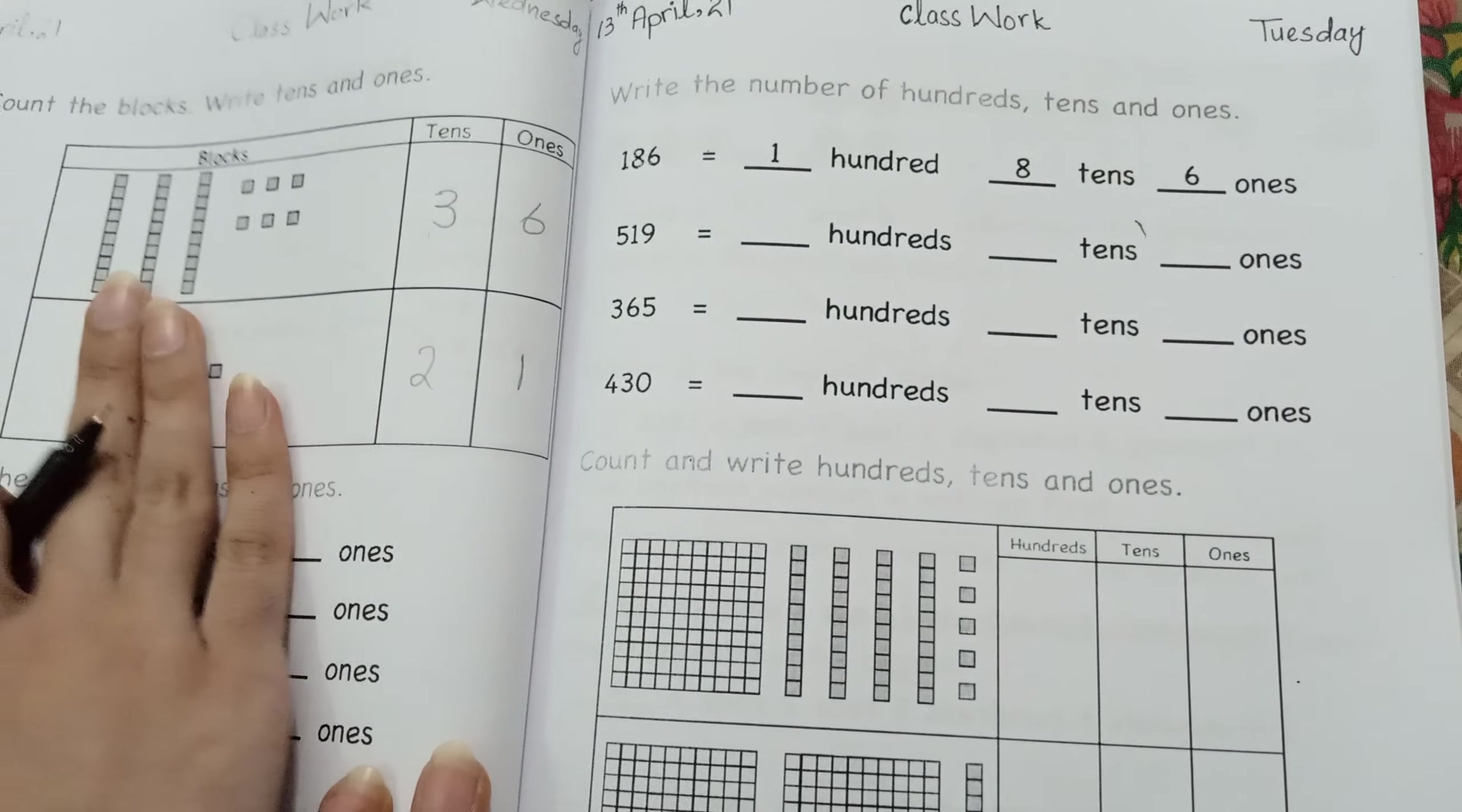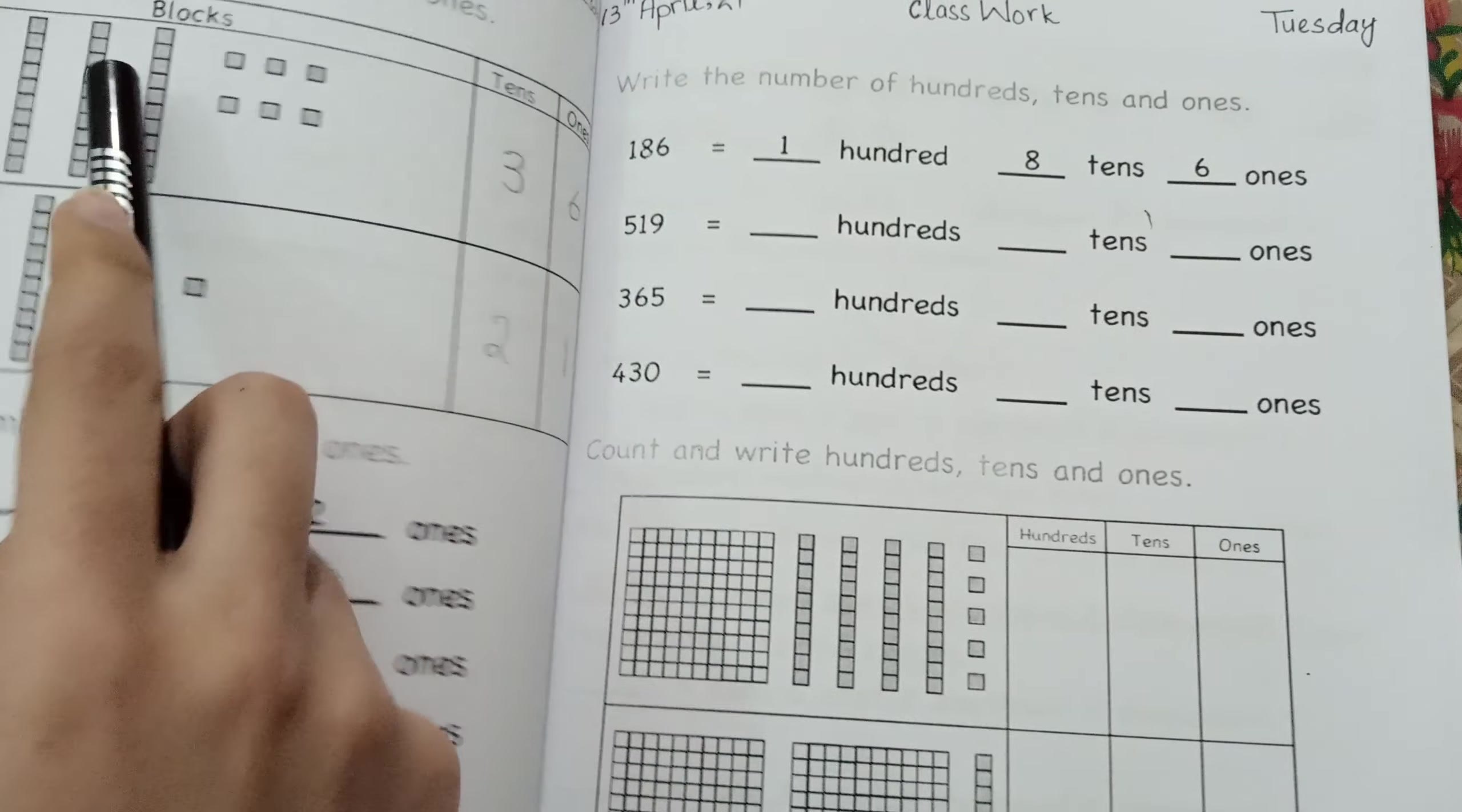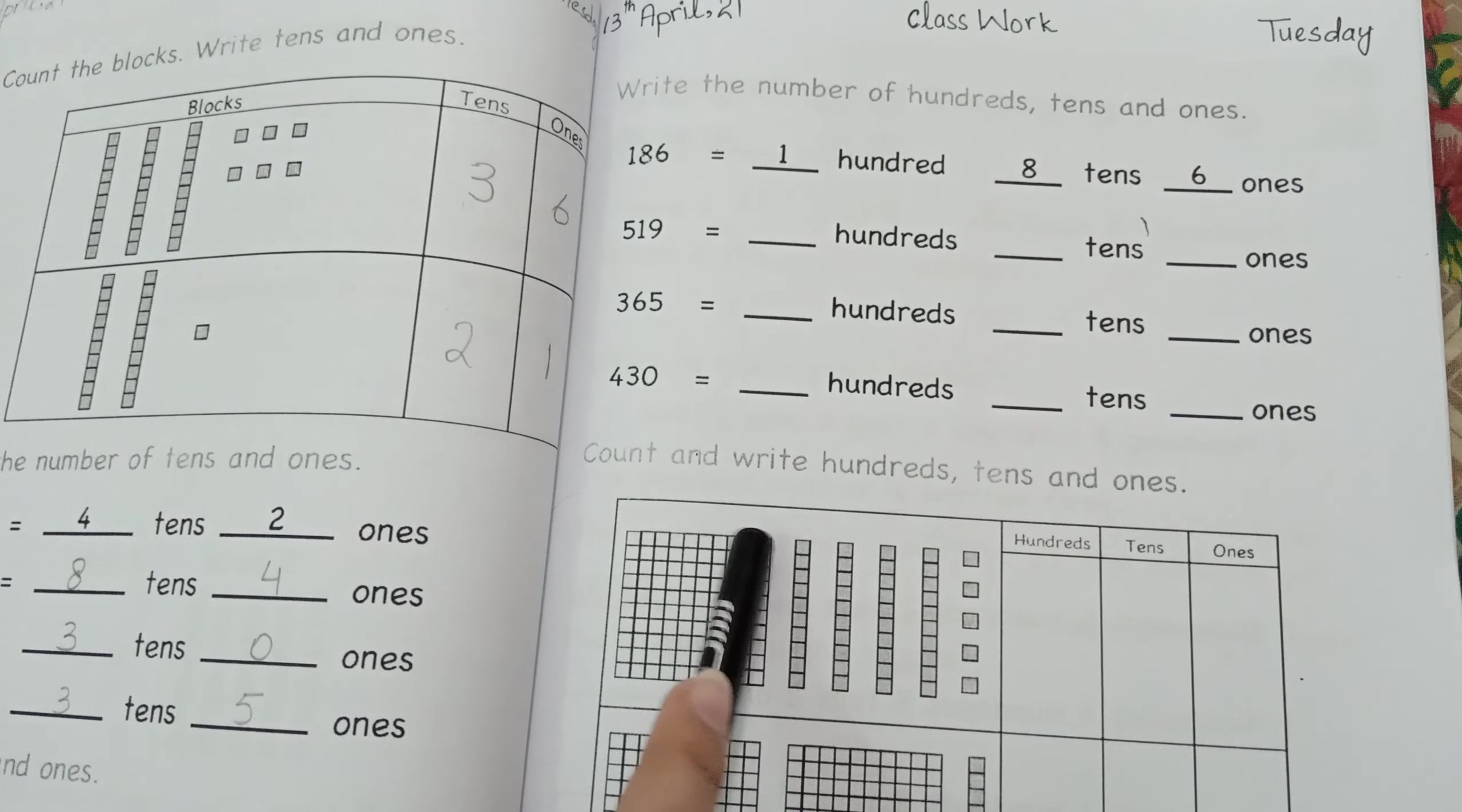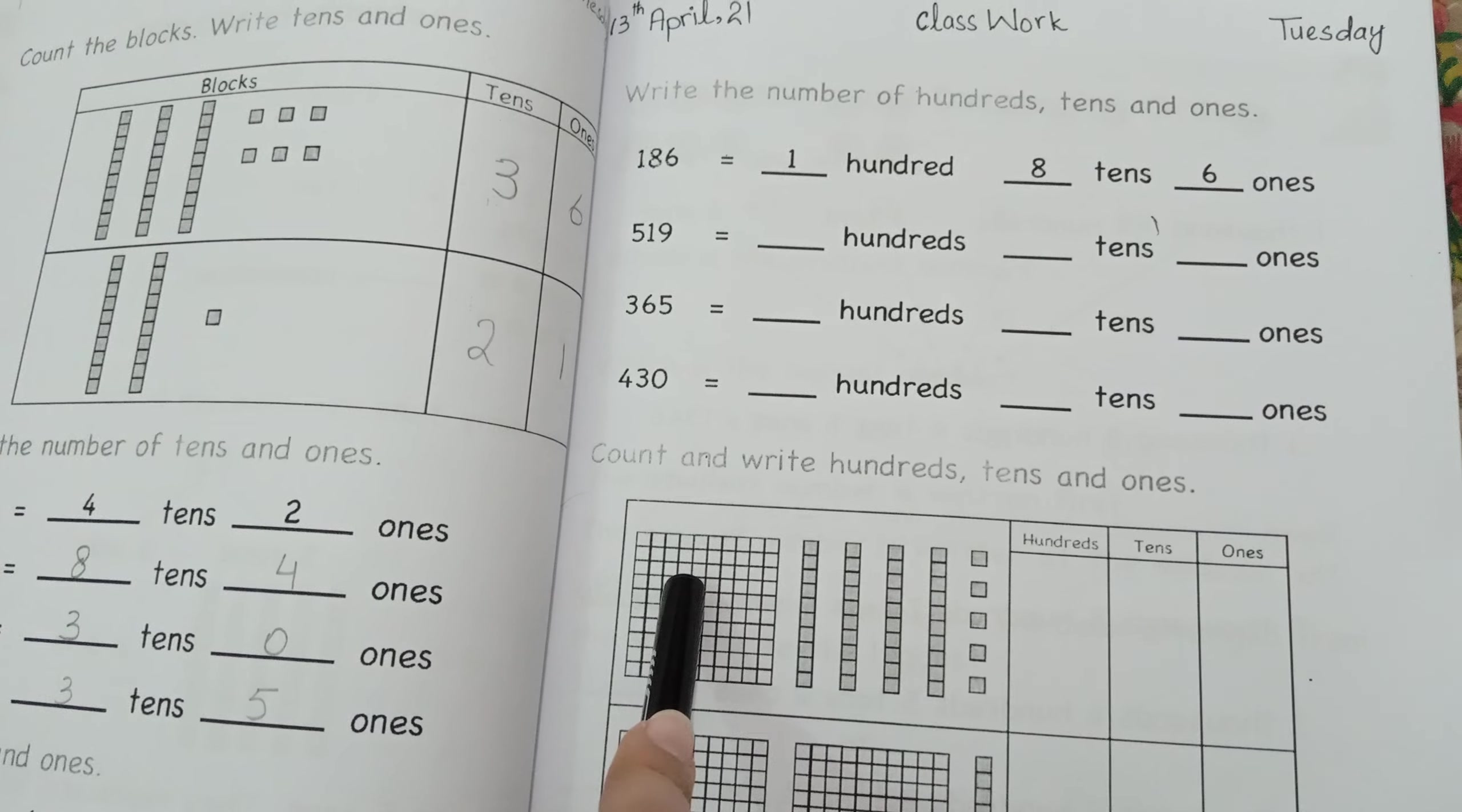I have told you first about tens and ones. Today we will do hundreds, tens and ones. You have seen that groups of blocks are tens and single blocks are ones. But when we have so many boxes, these are hundreds. When you count them, you will know that there are 100 blocks.